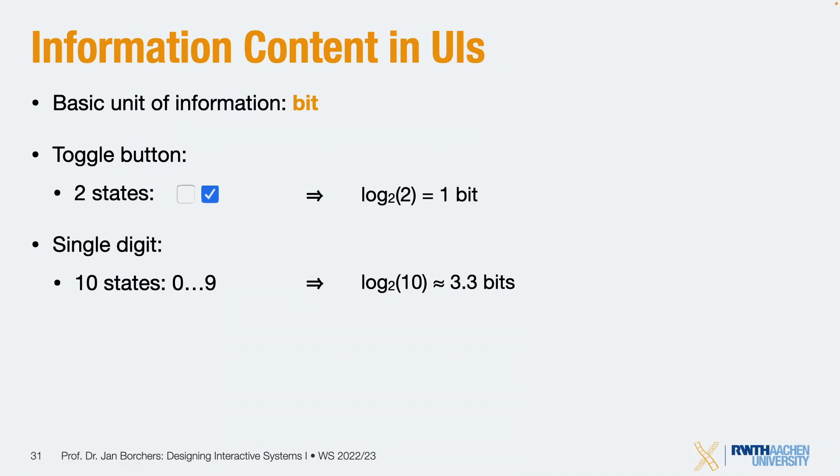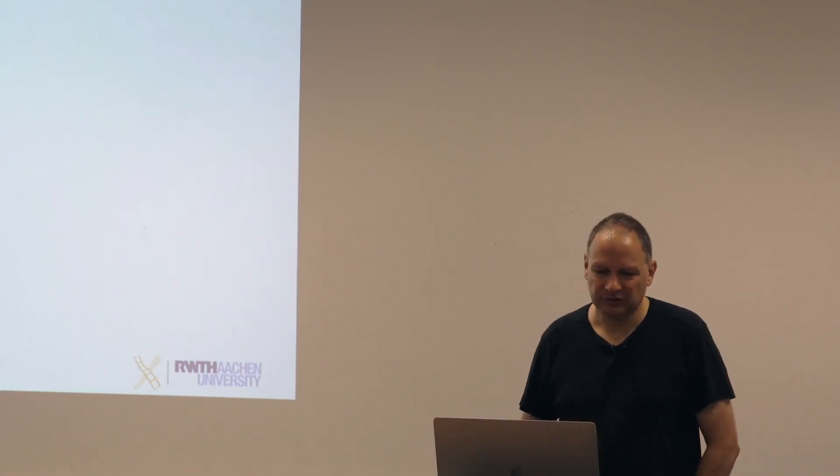The information content framework gives us an upper bound. Certain interfaces have extra stuff that doesn't add to the information actually passed through, and this is where the framework will help us. So: a single digit gives about 3.3 bits, a single uppercase/lowercase letter gives about 5.7 bits — log₂(52) — since 26 uppercase plus 26 lowercase is 52 letters, which is below 64, so just under six bits.